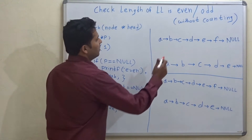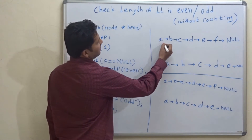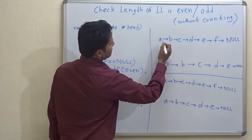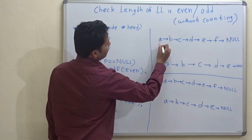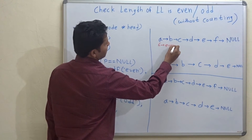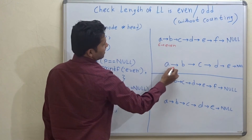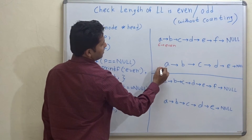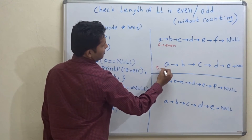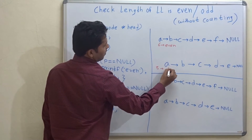For example, in this linked list the length is 6, which is even. And in this linked list the length is 5, which is odd.